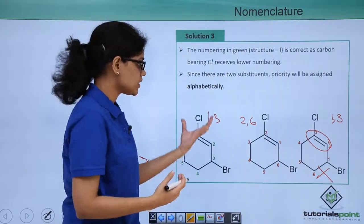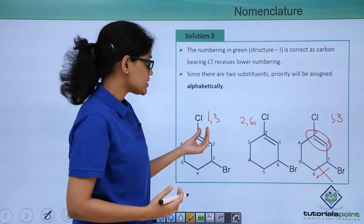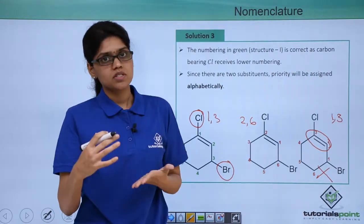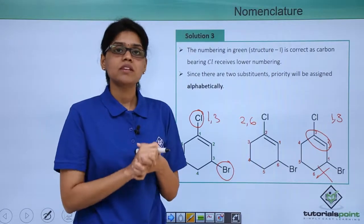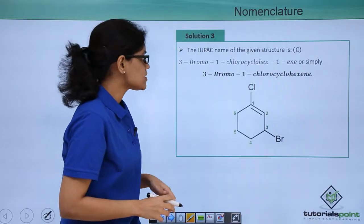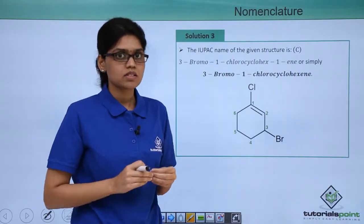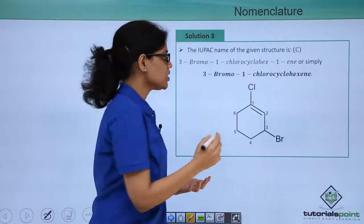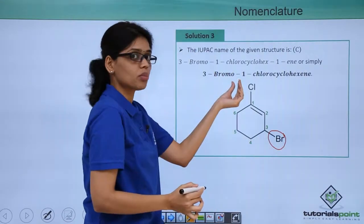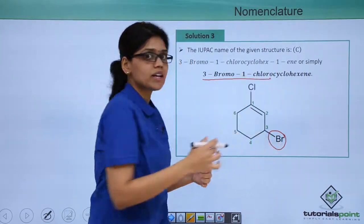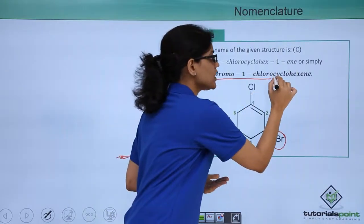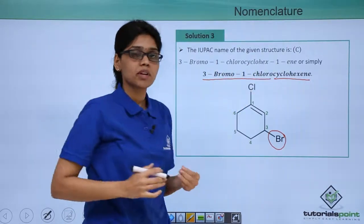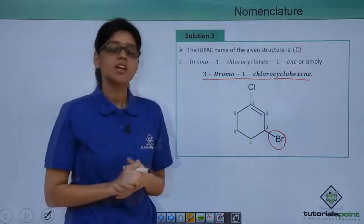Let's go further. The green structure is correct because chlorine receives the lower number. Now we have two substituents: chlorine and bromine. After numbering, substituents will be named based on alphabetical preference. Based on all these things, the correct IUPAC name of the given structure is 3-bromo-1-chlorocyclohex-1-ene, or simply 3-bromo-1-chlorocyclohexene, where bromine and chlorine are acting as prefixes because they are substituents. Cyclohexene is the system and '-ene' is the suffix. Bromine comes before chlorine because 'br' comes before 'cl' based on alphabetical preference.